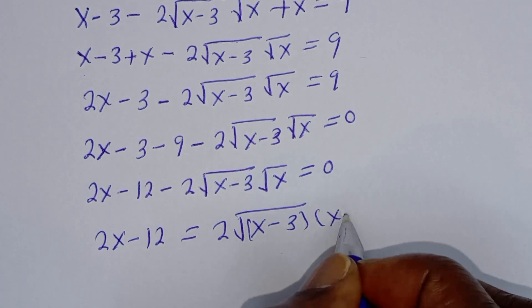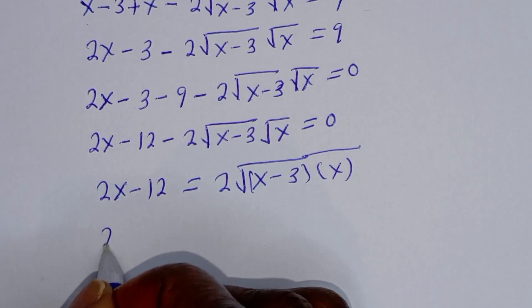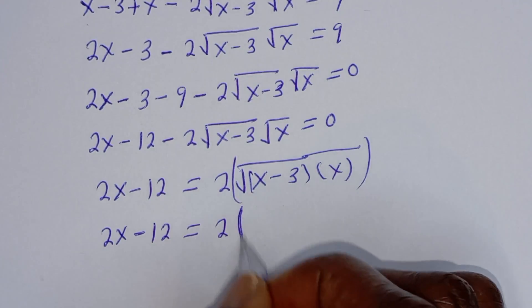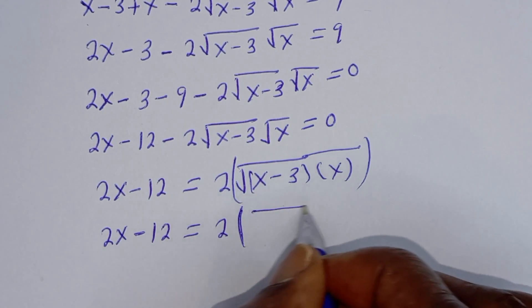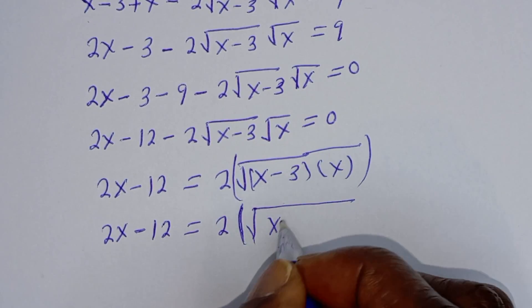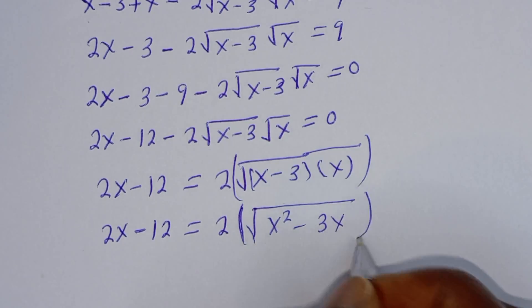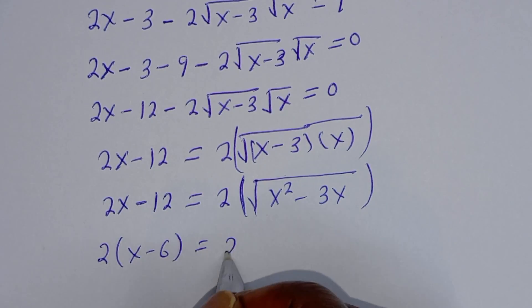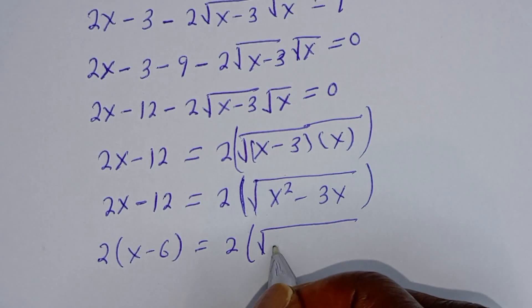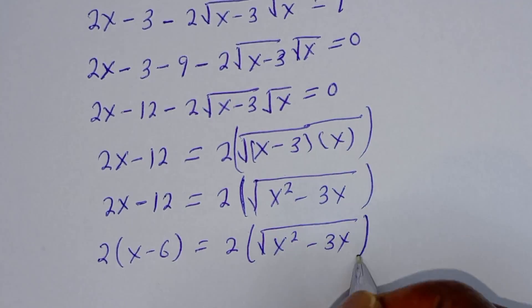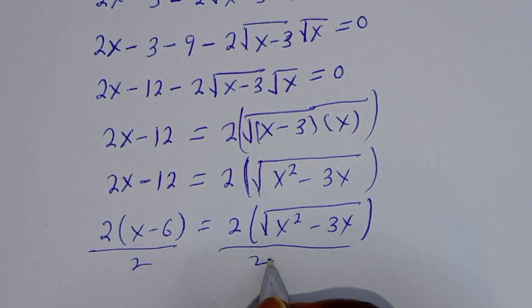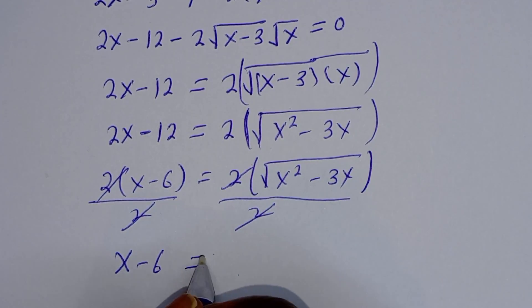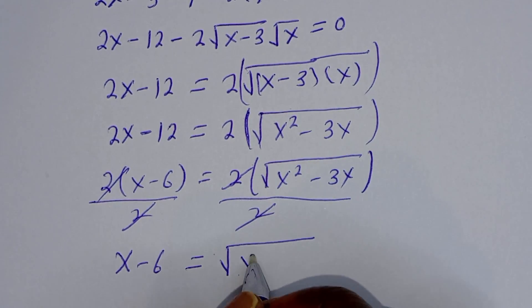Multiply by x, then 2x minus 12, which is equal to 2 times square root of s squared minus 3x. Now from here we can factor out 2: bracket x minus 6 is equal to 2 multiplied by square root of s squared minus 3x. Then let's divide both sides by 2. This will cancel, and we have x minus 6 is equal to square root of s squared minus 3x.